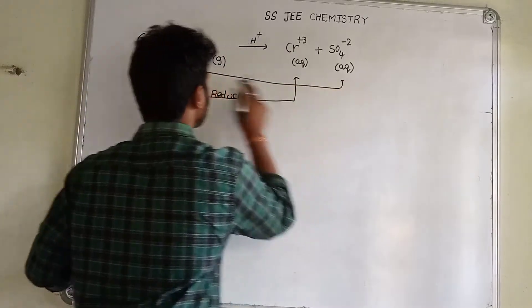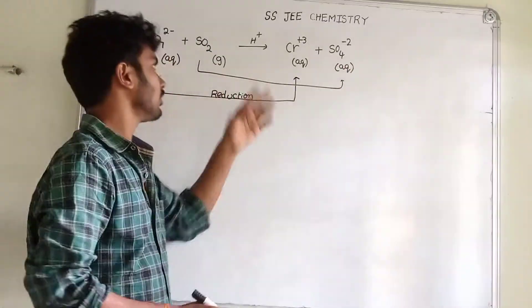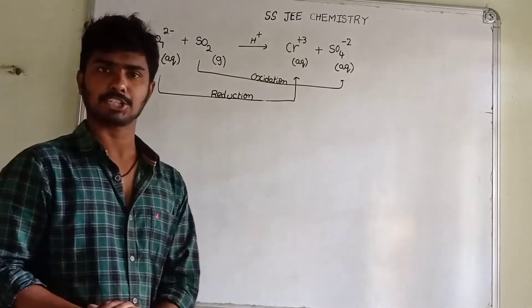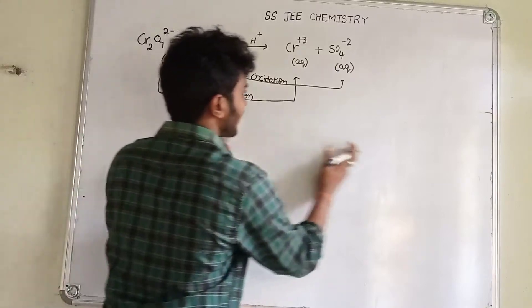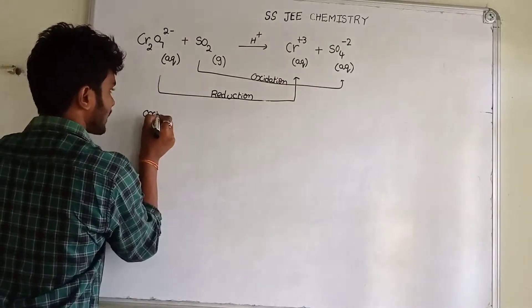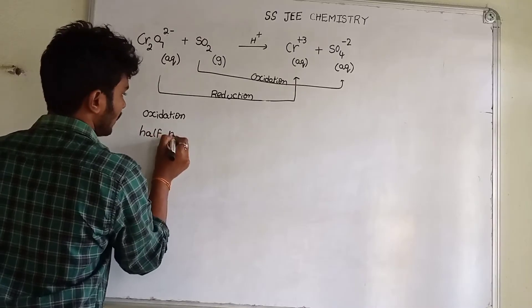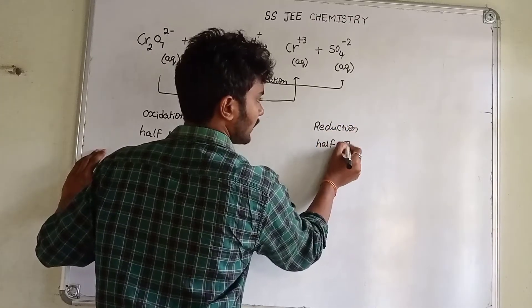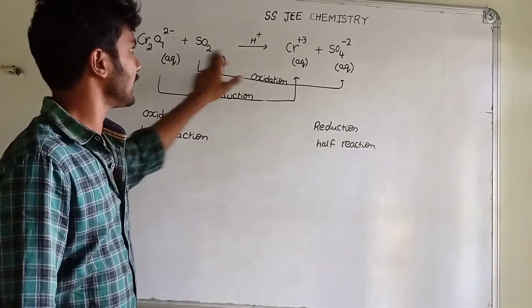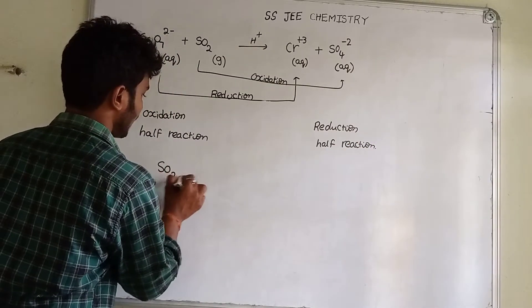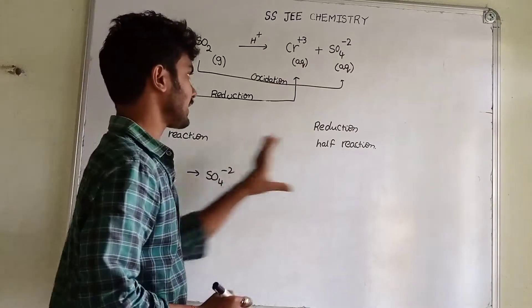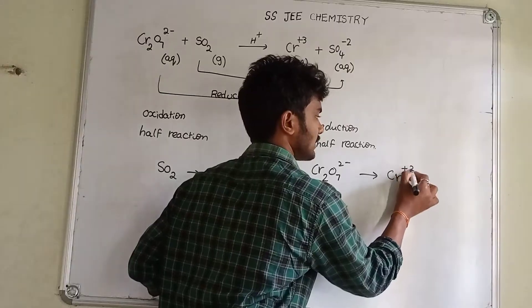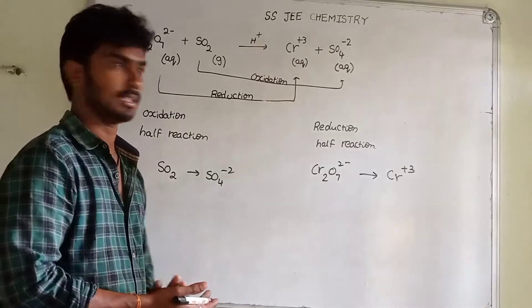We will add SO4²⁻. This is the oxidation half-reaction. Oxidation is a reduction. Now we will have the next step. So the oxidation half-reaction involves SO4²⁻, and the reduction half-reaction involves Cr2O7²⁻. Specifically, SO2 gives rise to SO4²⁻ — this is the oxidation half-reaction. And Cr2O7²⁻ gives rise to Cr³⁺ — this is the reduction half-reaction.